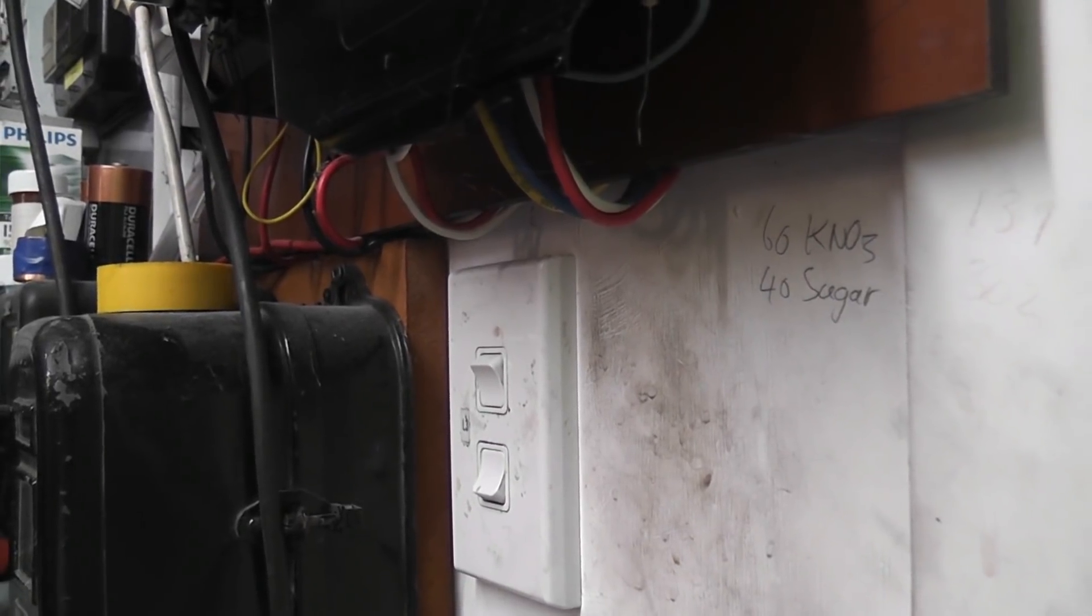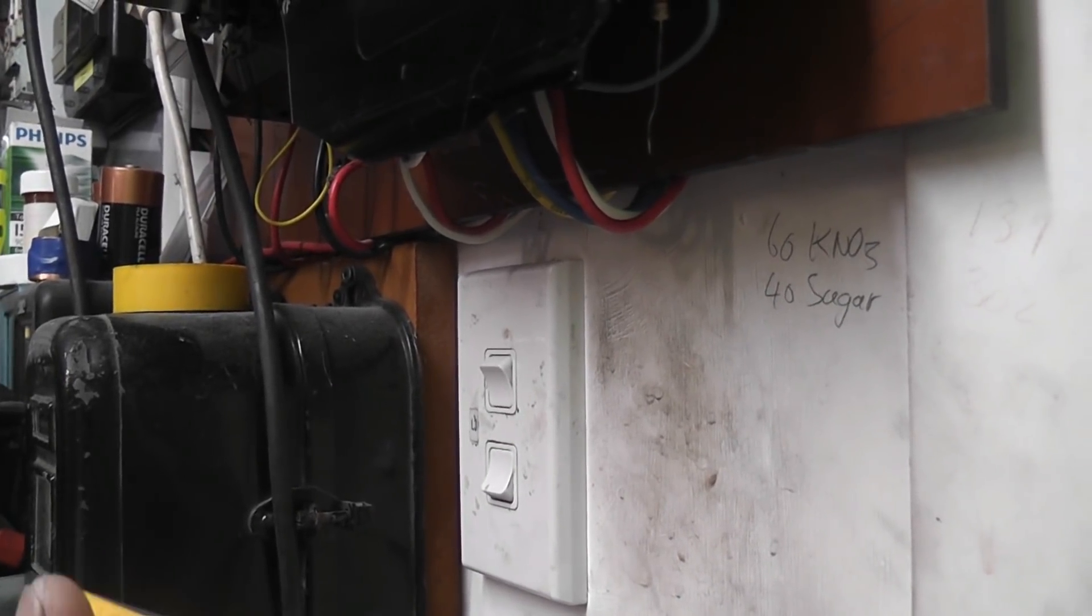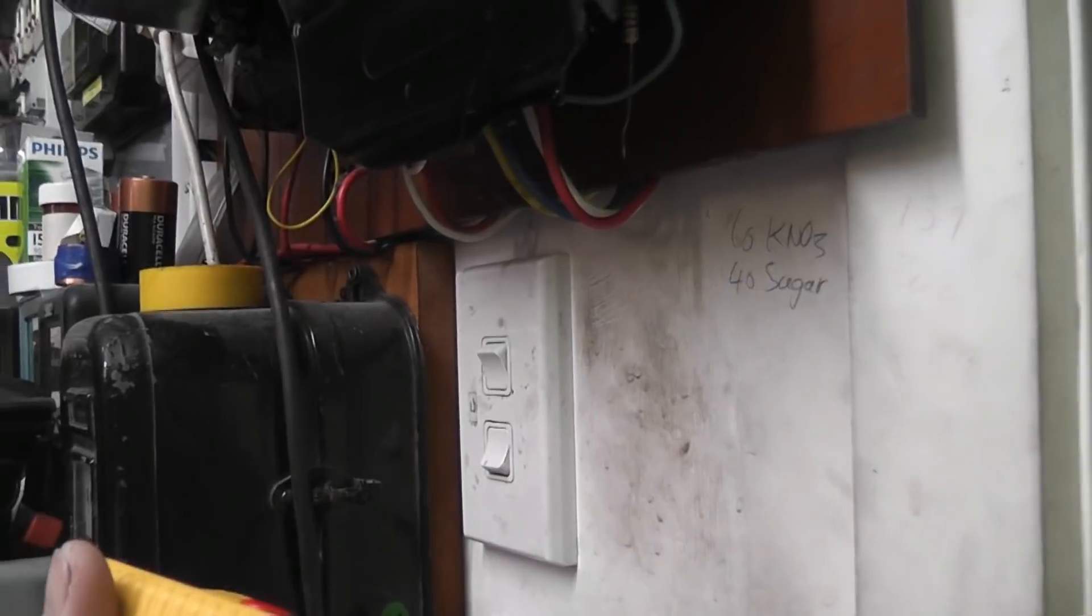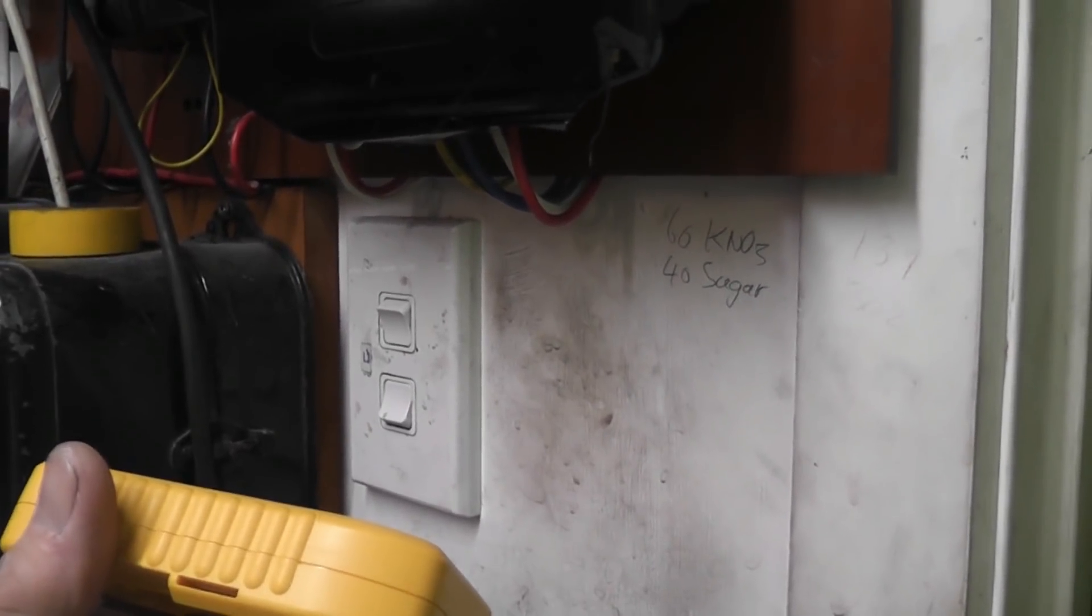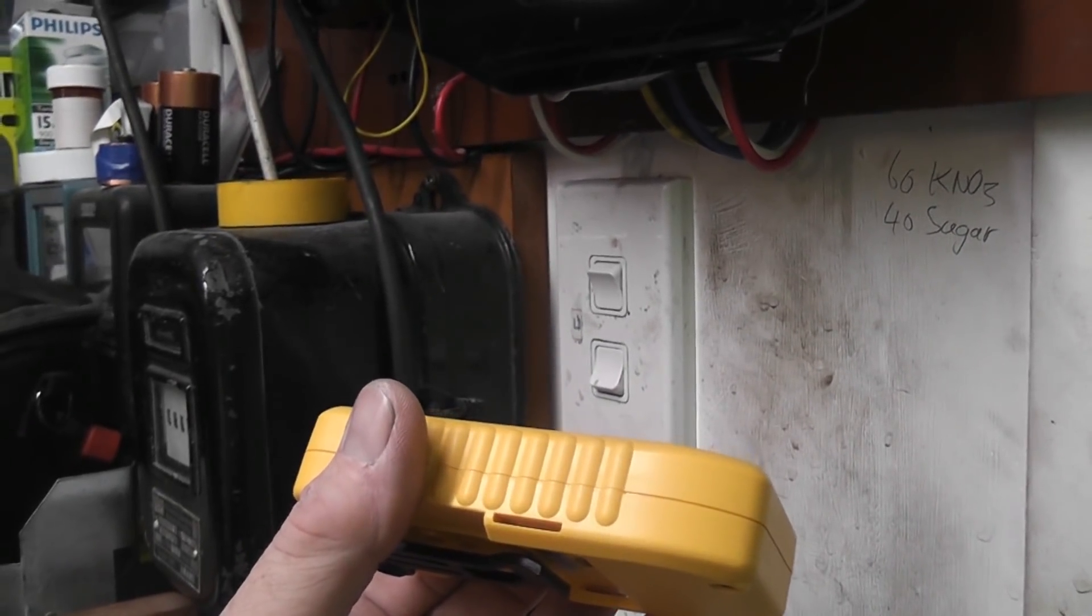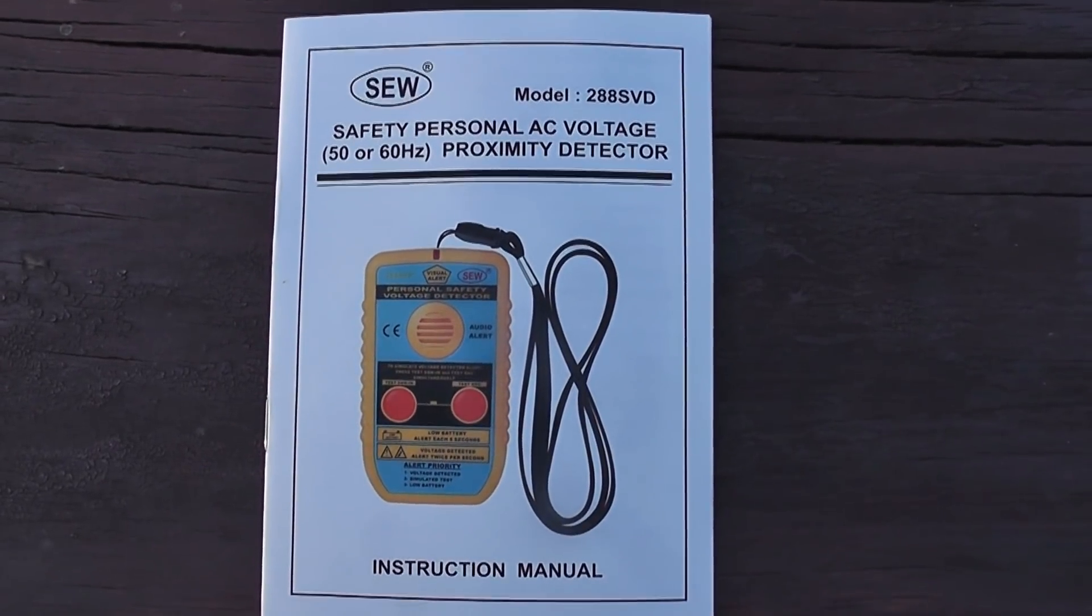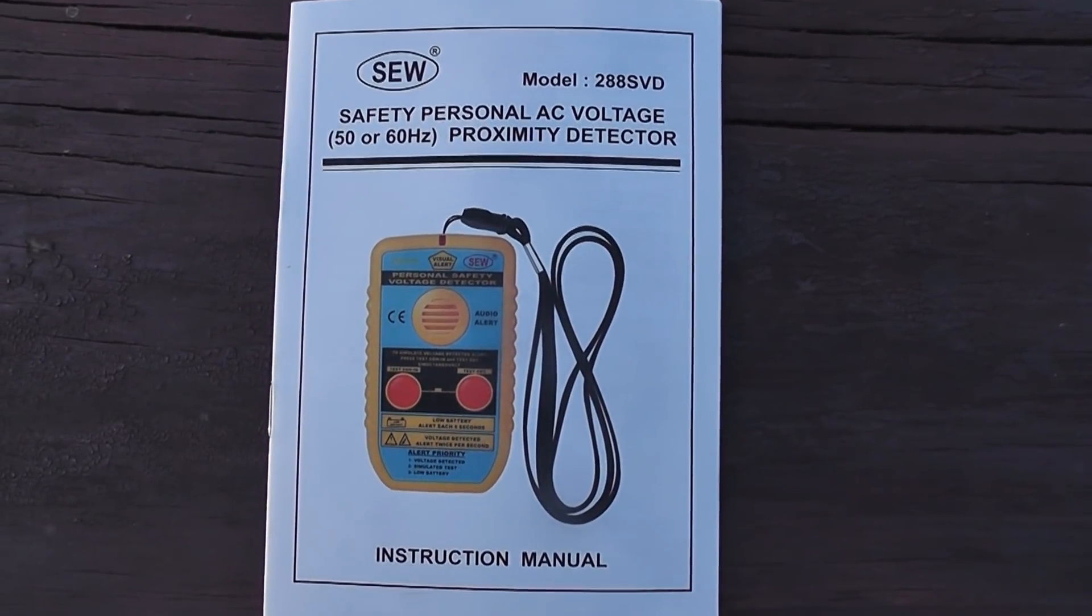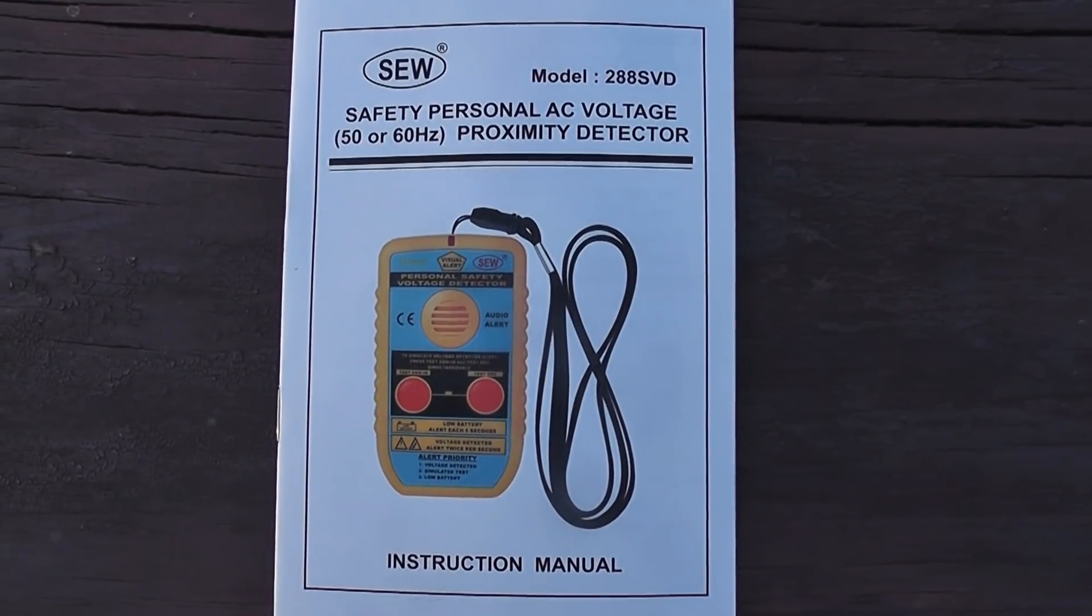De-energize the device. Also very good response near 230 volts wires. So if you're in case of pilots. So this will be... It's underneath a meter, 10 centimeters away. So it gives quite a good response on that. Really good. The SEW model 288 SVD voltage detector.